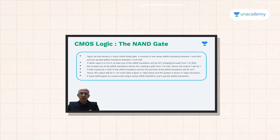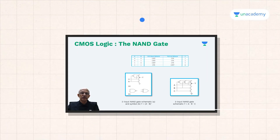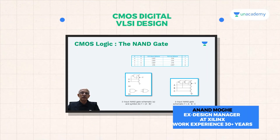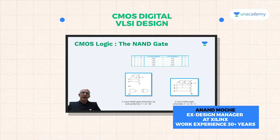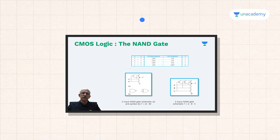Now the figure in this — we will go to a NAND gate and see how a NAND gate is constructed. This is the truth table for the NAND gate; all of you know about the truth table for a NAND gate.